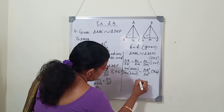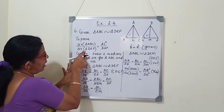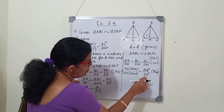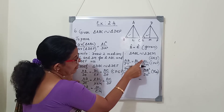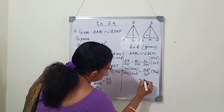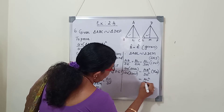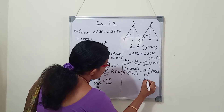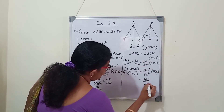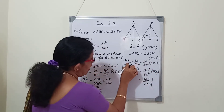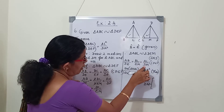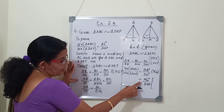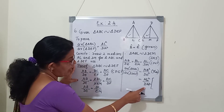We want to write area of ABC by area of DEF equals AL square by DM square. Instead of AB by DE, we can write AL by DM — we already proved this. So we write AL square by DM square. Reason: AB by DE equals AL by DM. So we proved that the ratio of the areas equals the square of the ratio of their corresponding medians.